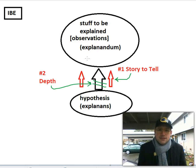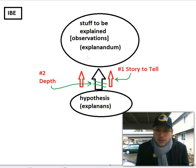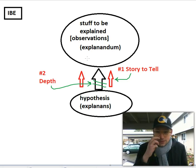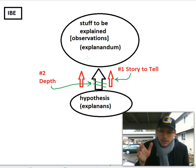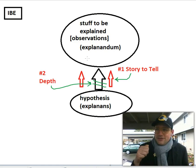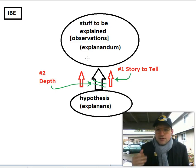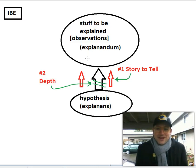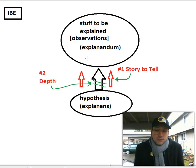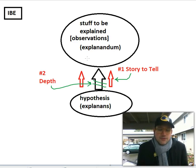I used some examples in class about explanatory situations where we'd be tempted to use inference to the best explanation because we can't directly observe what's going on — we just have facts we know are the case. Take the example of going to the doctor: you tell the doctor your symptoms, they diagnose your condition based on trying to explain those symptoms. There might be multiple symptoms that stand in need of explanation, and if the hypothesis can explain all of them, that's better than if it can only explain some.